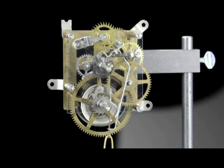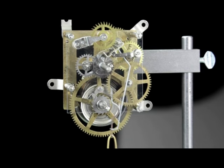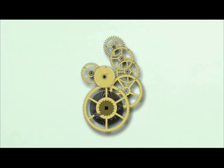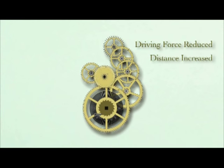We start with a large power source in the great wheel and transfer it to the pinion of the second wheel. From the second wheel to the pinion of the third wheel, and so forth. Each time we do this, the driving force, or torque, is reduced, but the rotational distance traveled in each stage is increased.